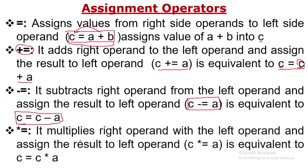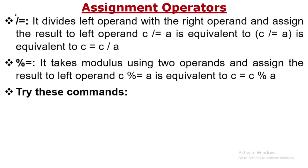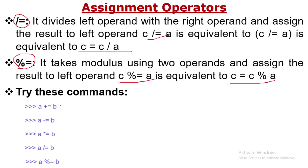The multiply-equal-to (*=) operator multiplies the right-hand operand with the left-hand operand and assigns the result to the left-hand operand. The divide-equal-to (/=) operator works the same way. The modulus-equal-to (%=) operator also follows the same pattern — when the variable is common, you can write the expression in this short expressive form.